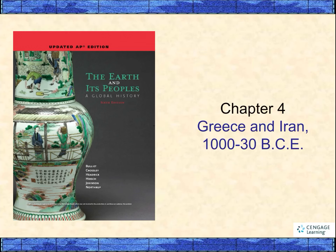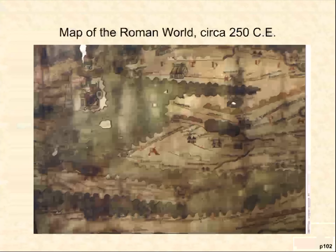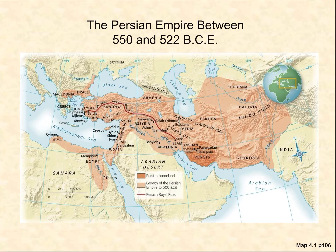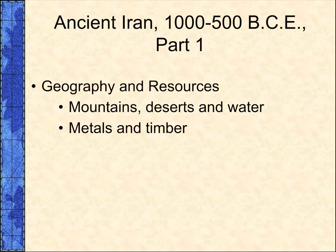We are in chapter four. We're going to be looking at Greece and Iran from about 1000 to 30 BCE. This is a map of the Persian Empire. We're going to be discussing some of the different areas here, but it gives you a little bit of a mindset of where we're going.